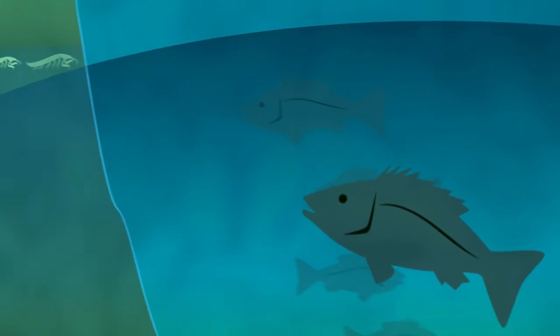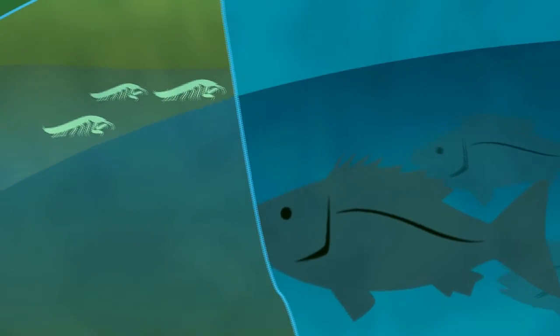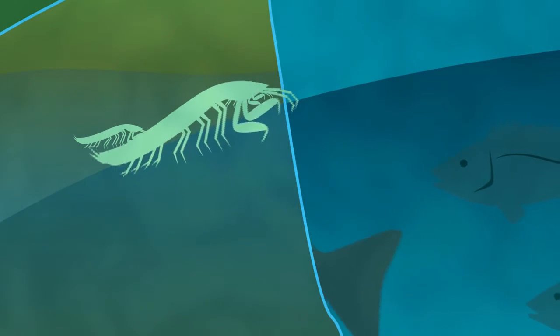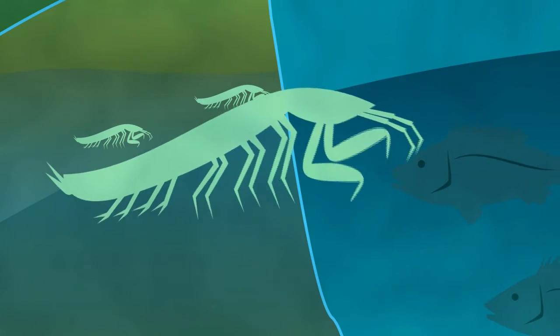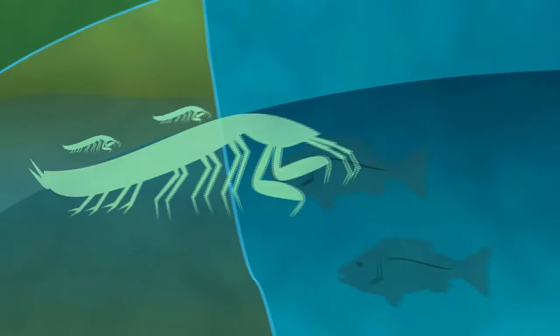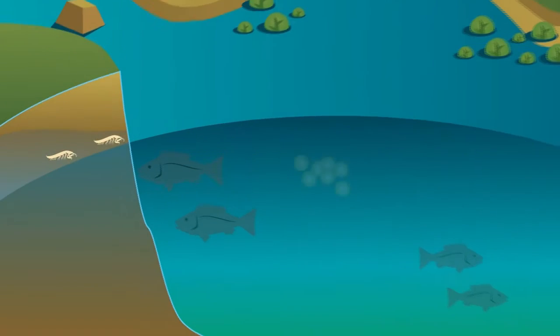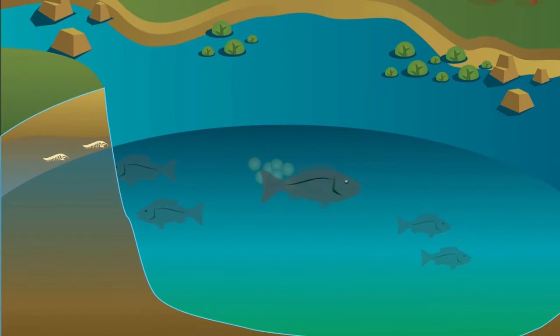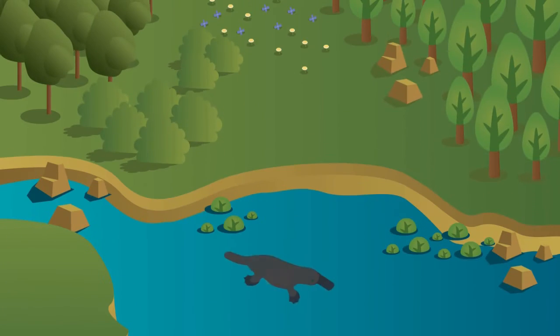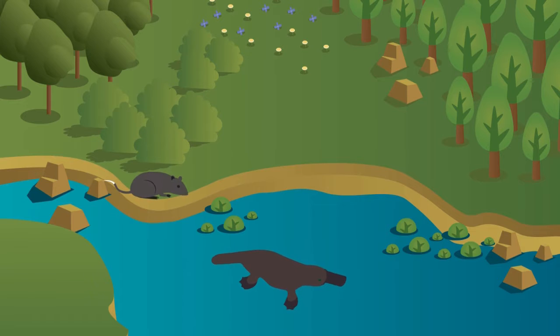Even in groundwater, there are tiny organisms called stygofauna that need connections underground. Each species has different needs for connectivity at different stages of its life cycle, so we need to understand each species' life cycle to know what type of connectivity is needed.